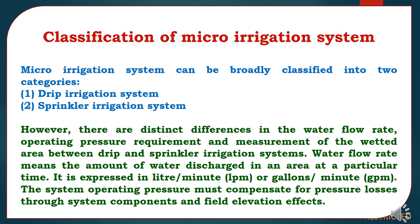Micro-Irrigation systems can be broadly classified into two categories: drip irrigation system and sprinkler irrigation system. However, there are distinct differences in the water flow rate, operating pressure requirement, and measurement of the wetted area between drip and sprinkler irrigation systems. Water flow rate means the amount of water discharged in an area at a particular time, expressed in liters per minute or gallons per minute. The system operating pressure must compensate for pressure losses through system components and field elevation effects.